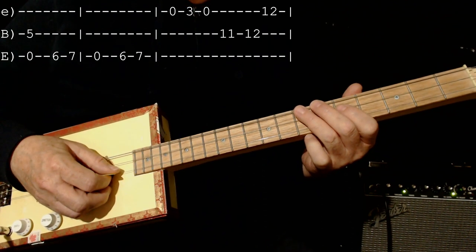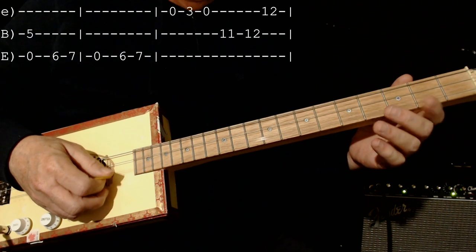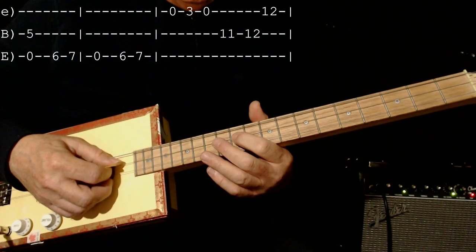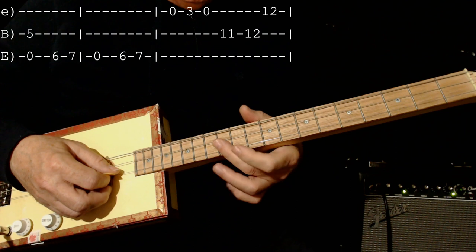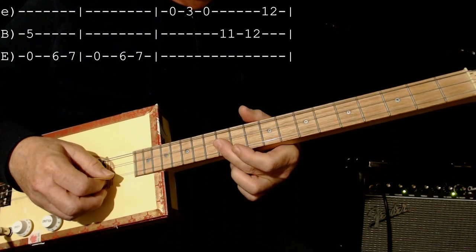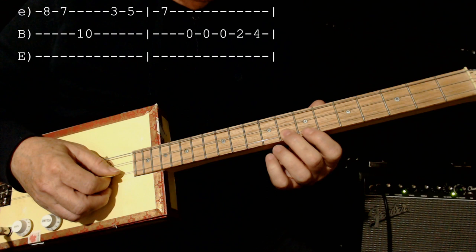Now it does almost the same thing again. 0, 3, 0. 11, 12 in the middle. 12 on the high. Then 8, 7, and 10 on the middle.